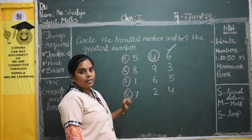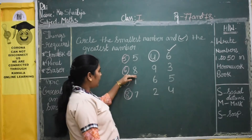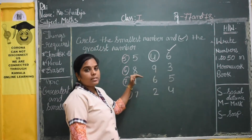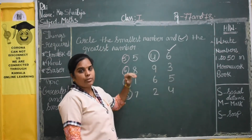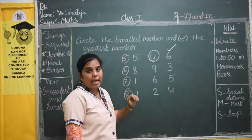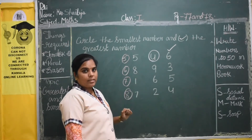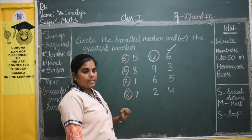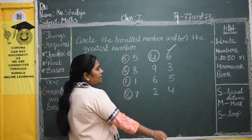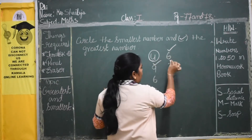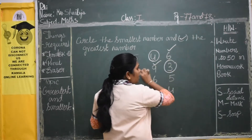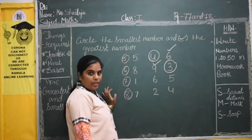Coming to the 6th one. Here we have 8, 9, 3. Among these three numbers, we should find out which is the smallest and which is the greatest. So here, 9 is the greatest and 3 is the smallest.